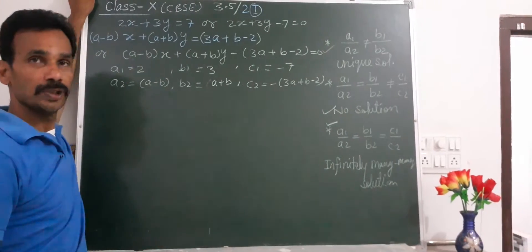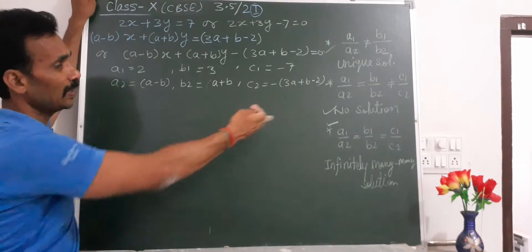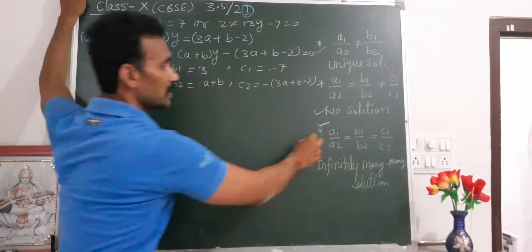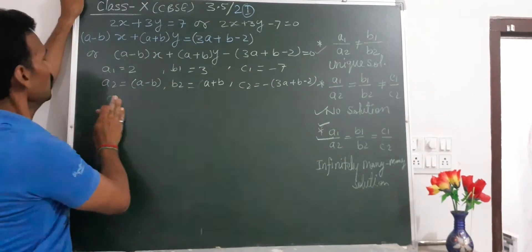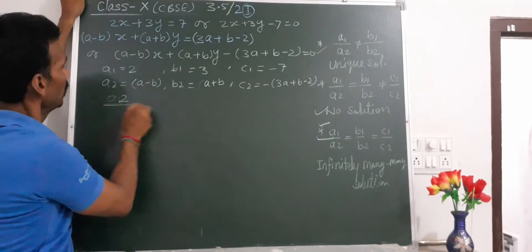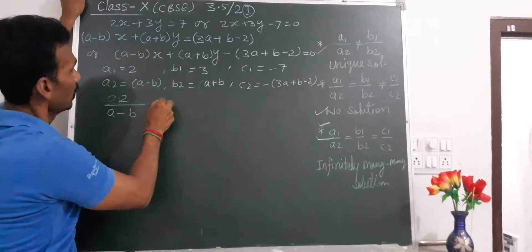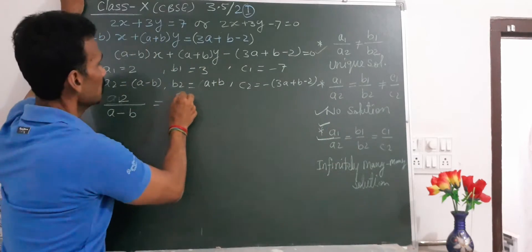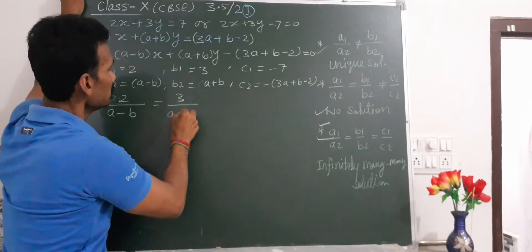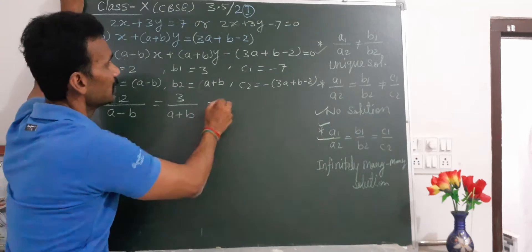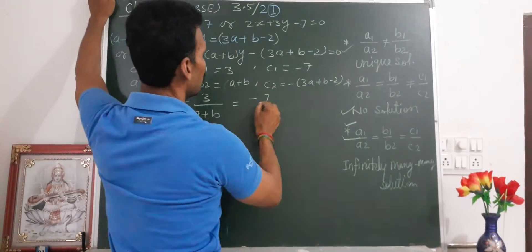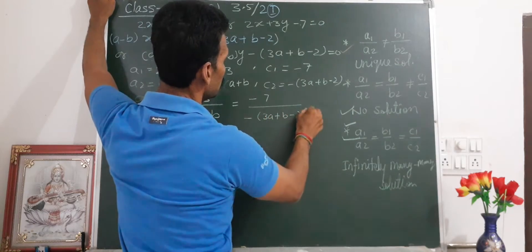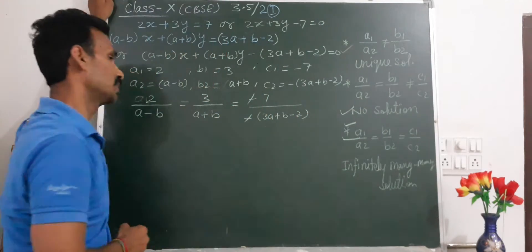For infinitely many solutions, the condition is: A1 upon A2 equals B1 upon B2 equals C1 upon C2. So: 2 upon (A minus B) equals 3 upon (A plus B) equals minus 7 upon minus (3A plus B minus 2). All ratios are equal.